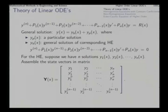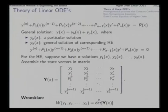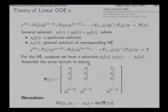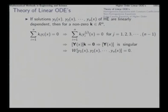The Wronskian in the nth order case is the determinant of this fundamental matrix — a direct generalization of the second-order case. If the n solutions of the homogeneous equation are linearly dependent, then there exists a non-zero vector k such that the linear combination of the solutions is identically zero.